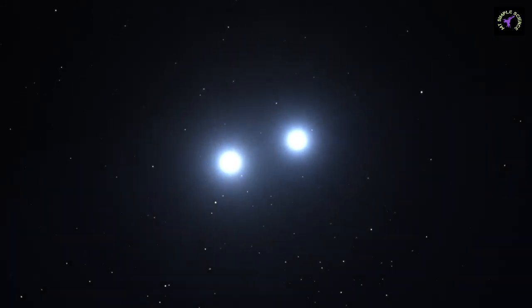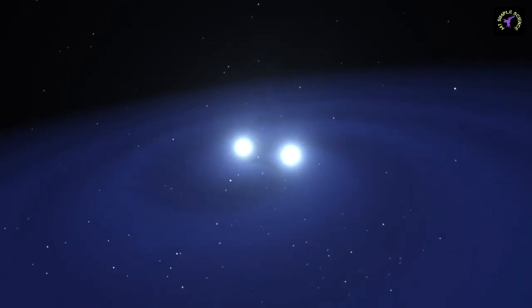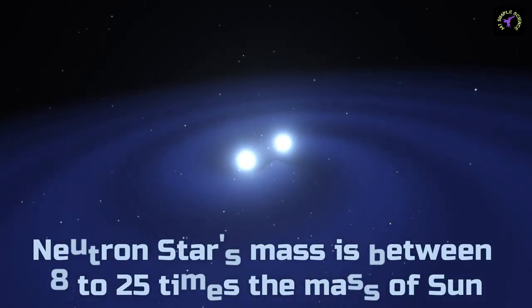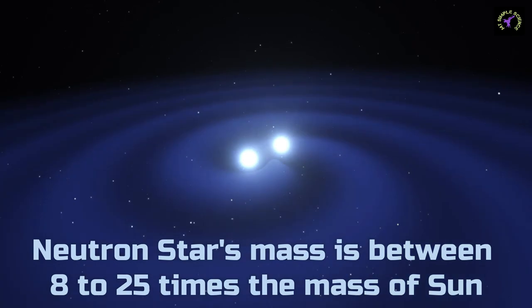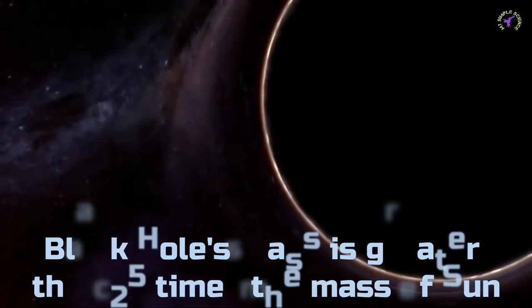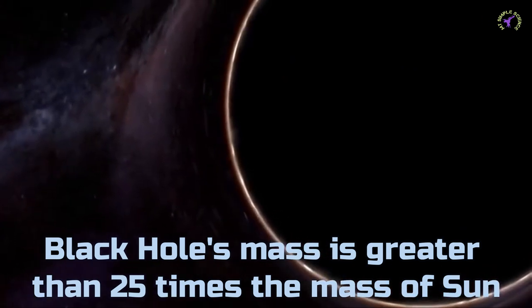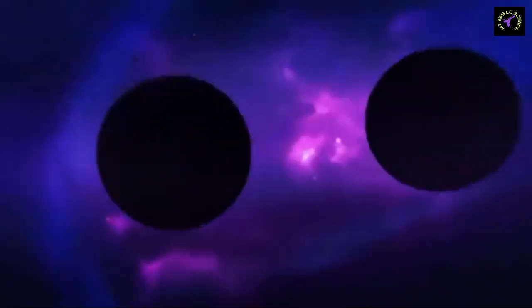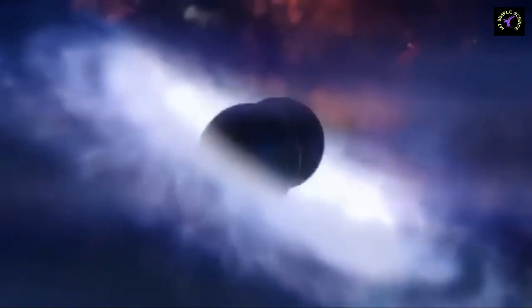For the study of gravitational waves, we are dependent on massive objects like neutron stars and black holes. Neutron stars are the final phases of stars having mass 8 to 25 times larger than the Sun, and black holes are the final phases of stars having mass larger than 25 times the Sun. Binary neutron stars, binary black holes, etc., are also sources of gravitational waves.